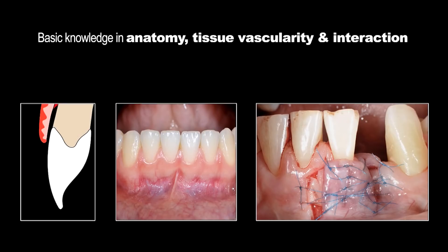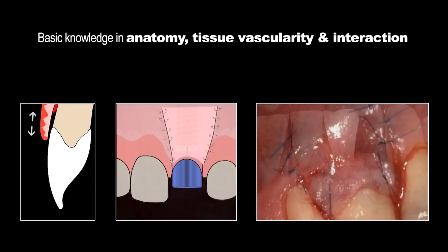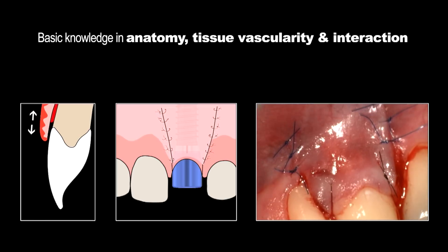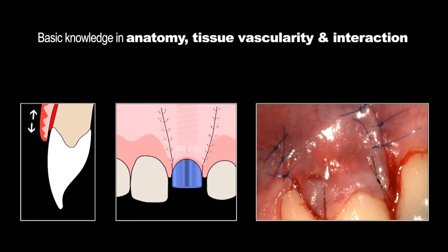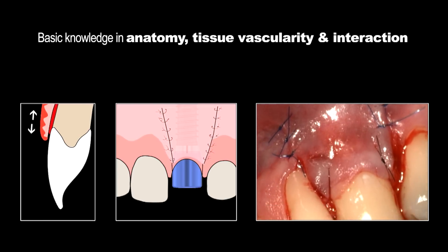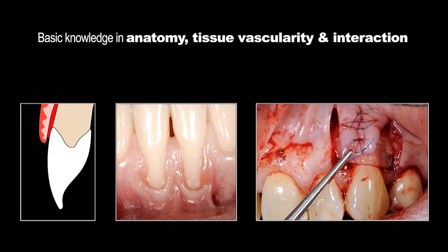On such surfaces, blood clot adherence is not the same as on a connective tissue wound bed. On the right side you see the suturing after a recession coverage — several sutures that firmly fix the flap on the wound bed. If there is mobility in the wound area, the blood clot will disrupt and this will influence healing.